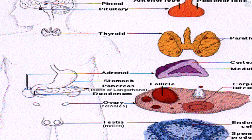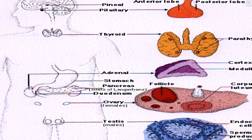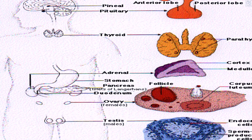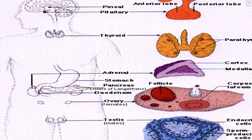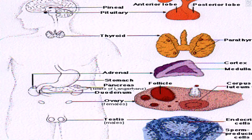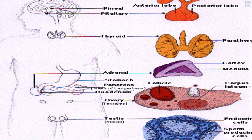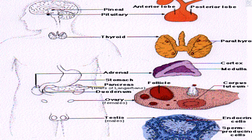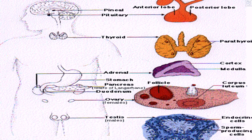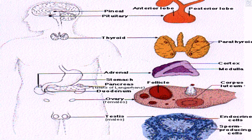Hormones travel to target tissue and generate a response. They regulate various human functions including metabolism, growth and development, tissue function, and mood. The field of study dealing with the endocrine system and its disorders is endocrinology, a branch of internal medicine.